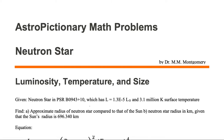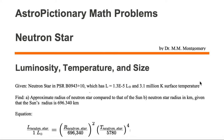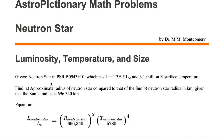In this astro-pictionary math problem, we're going to look at a neutron star's luminosity, temperature, and size. We're given a neutron star in PSR B0943+10, which has a luminosity of 1.3E-5 solar luminosities and a 3.1 million Kelvin surface temperature.